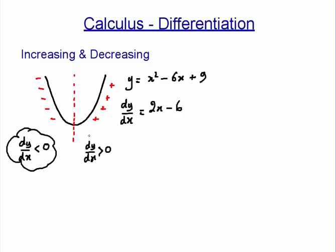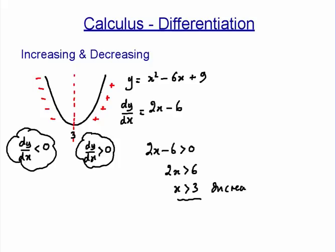Those are our two conditions to decide where does it increase, where does it decrease. If we look for 2x minus 6 greater than 0, we have x is 3, so we have increasing when x is greater than 3. Vice versa, we have decreasing when x is less than 3.